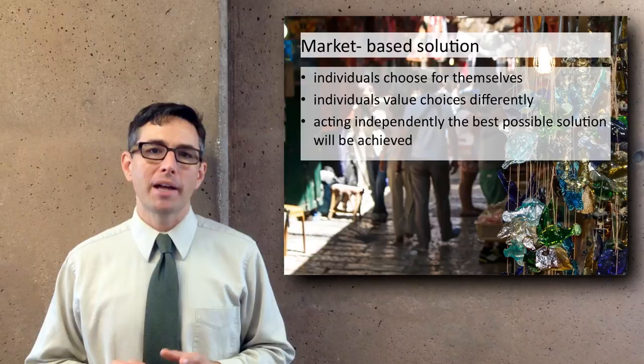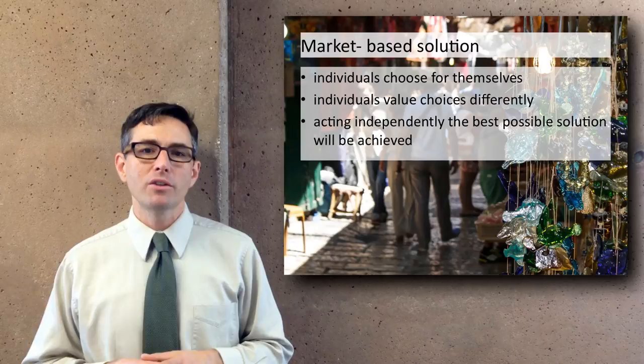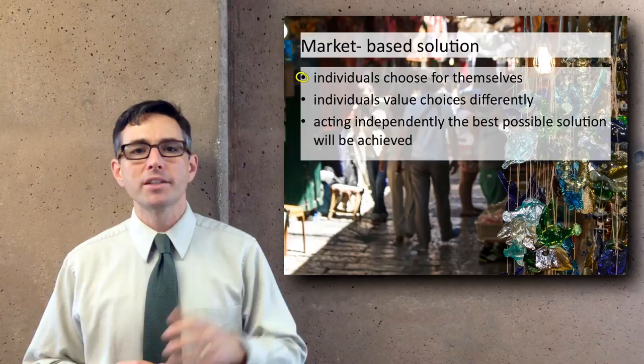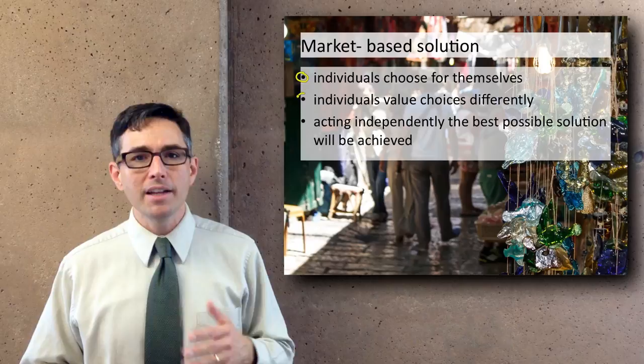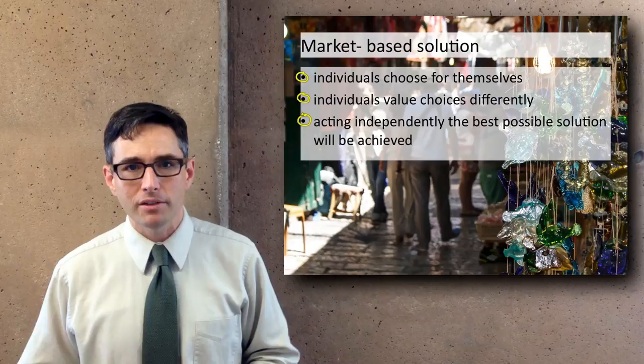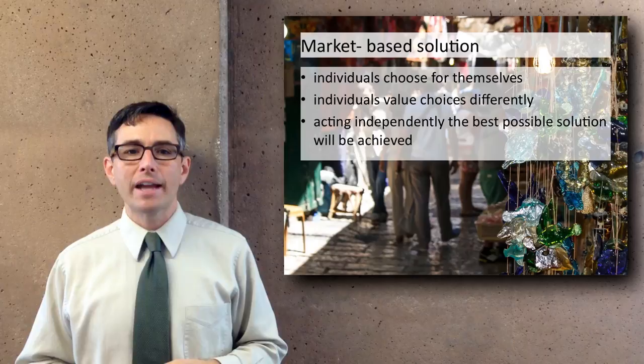A common response to this would be to rely on market-based solutions. A market-based solution argues that individuals left to their own devices will stop having children because they see they are worse off with more children. Proponents of the market-based position argue that because everyone values different things differently — some value children more than vacations — we should let everyone make their own individual choice and this will end up being best for everyone. In order to counter this market argument, Hardin introduced the idea of the tragedy of the commons.